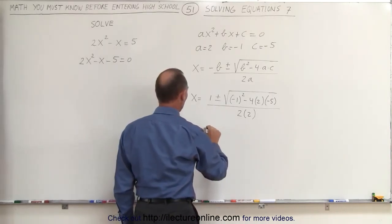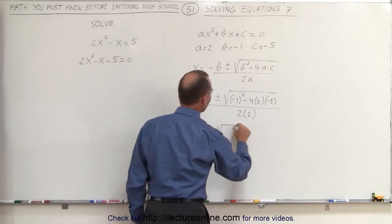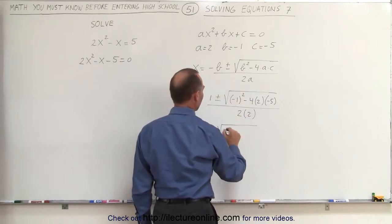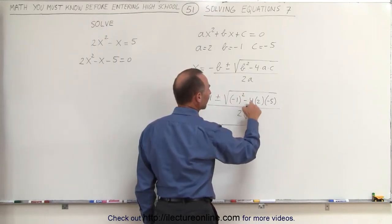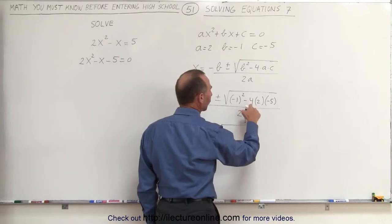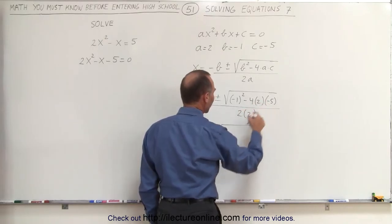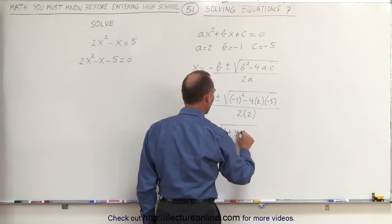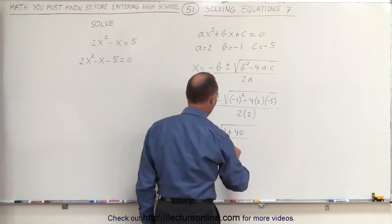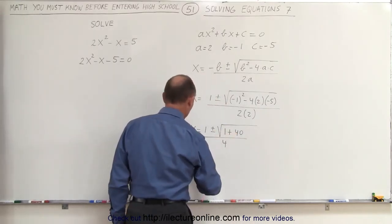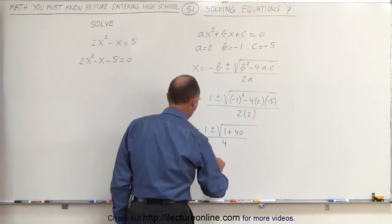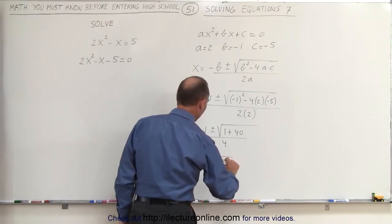x is equal to 1 plus or minus the square root of... negative 1 squared is simply 1. Minus times a minus gives us a plus. 4 times 2 is 8, times 5 is 40, so plus 40 divided by 4. Combining these two, we end up with x is equal to 1 plus or minus the square root of 41 divided by 4.